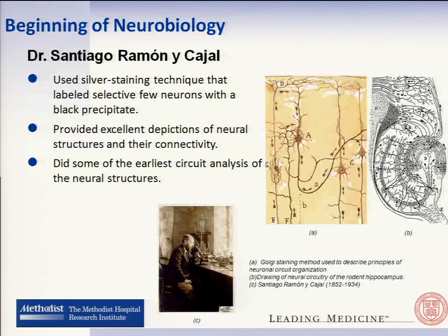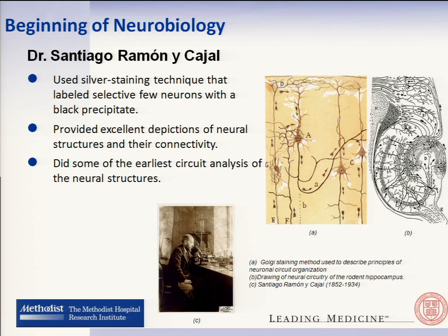As most of us know, it all began with the work of Dr. Santiago Cajal when he used silver staining technique to isolate a few neurons. With this, he was able to study the structure and the connectivity of the neuronal components. It was his pioneering work in the earlier circuit analysis that led to the foundations of modern neurobiology.